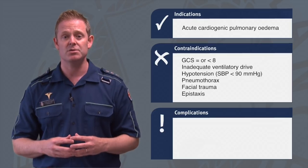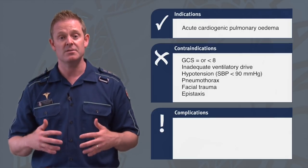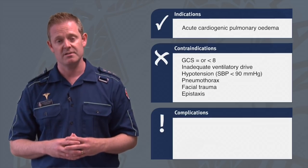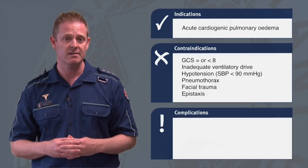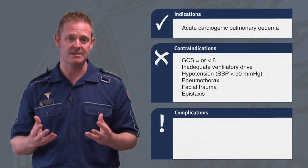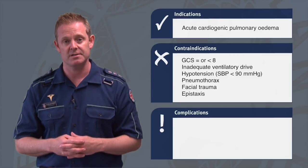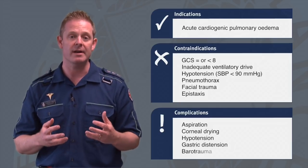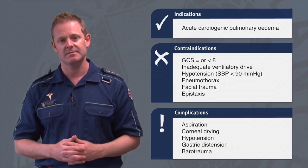Contraindications include: a patient with a GCS of equal to or less than 8, insufficient ventilatory drive, hypotension characterised by a blood pressure of less than 90mmHg systolic, pneumothorax, and facial trauma or epistaxis. Officers must also be aware of the following complications: aspiration, corneal drying, hypotension, gastric distension, and barotrauma.